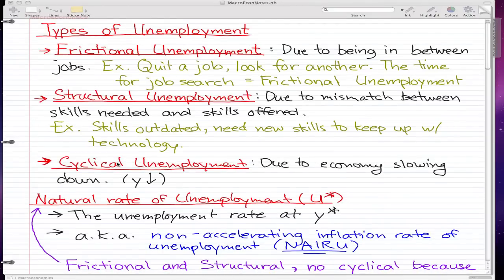The last type of unemployment is Cyclical Unemployment and this is due to the economy slowing down. We have our output falling, that's the economy slowing down and Cyclical Unemployment is like boom and bust, and those are your three types of unemployment.